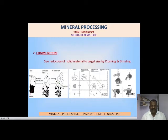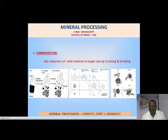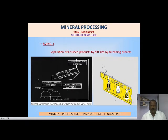First we will see comminution. Comminution is a process of reducing the size of solid material to a target size by crushing and grinding. When bigger size material is broken into smaller pieces, we screen it and remove the gangue minerals. Comminution consists of four forces: tensile force to break the material, compression force to compress and break the material, impact force to crush the material, and shearing force to break the material to the required size.